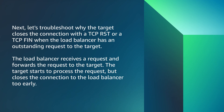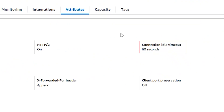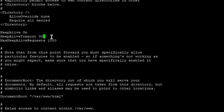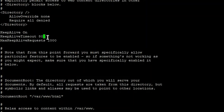Next, let's troubleshoot why the target closes the connection with a TCP RST or TCP FIN when the load balancer has an outstanding request to the target. The load balancer receives a request and forwards it to the target. The target starts to process the request but closes the connection to the load balancer too early. This occurs when the duration of the keep-alive timeout configured on the target is shorter than the idle timeout value of the load balancer. Make sure that the keep-alive timeout duration is longer than the idle timeout value.